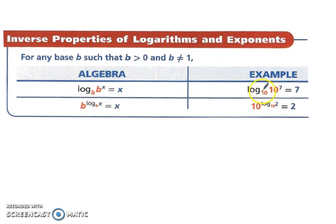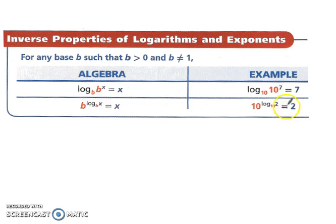For example, log base 10 of 10 to the 7th power — both bases are the same, so when you simplify you get the exponent 7. Similarly, 10 to the log base 10 of 2 — both are 10, and they don't have to be 10, they just have to be the same — simplifies to 2.